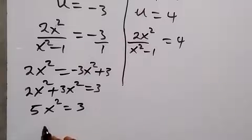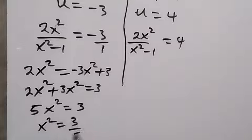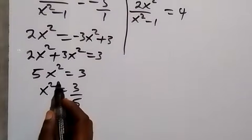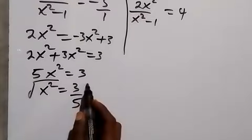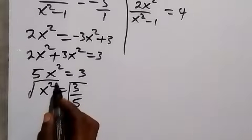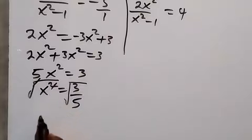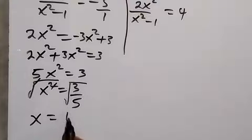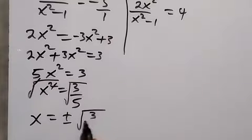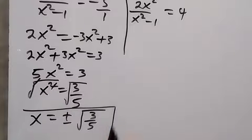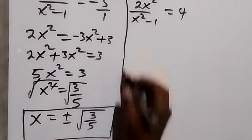Dividing both sides by 5: x² equals 3 over 5. Taking the square root on both sides, we have x equals plus or minus the square root of 3 over 5. So we have two values of x: one positive and one negative.